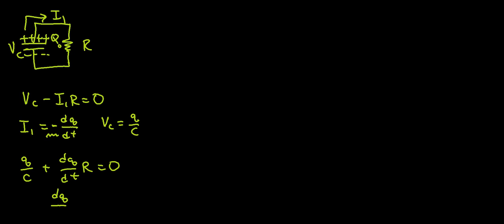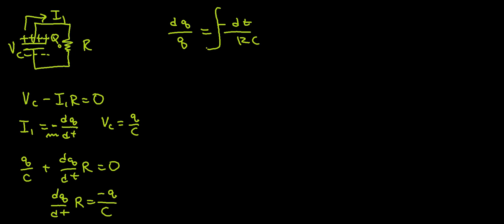Doing some algebra: dQ/dt times R equals negative Q over C. Separating variables, I have dQ over Q equals negative dt over RC. Just like the charging case, I'm going to integrate both sides. For time it's 0 to t. For Q, we're going from Q naught — because at time t equals 0 we have the maximum charge — up to some arbitrary little q, since we're looking for a function Q of t.